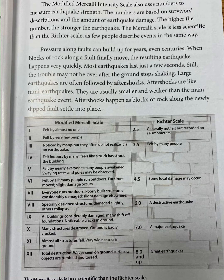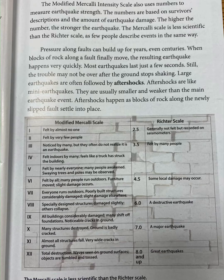The Modified Mercalli Intensity Scale also uses numbers to measure earthquake strength, based on survivors' descriptions and the amount of earthquake damage. The higher the number, the stronger the earthquake. The Mercalli scale is considered less scientific than the Richter scale, as few people describe events in the same way. Pressure along faults can build up for years, even centuries. When blocks of rock along a fault finally move, the resulting earthquake happens very quickly — most earthquakes last just a few seconds. Large earthquakes are often followed by aftershocks, which are usually smaller and weaker than the main earthquake event.